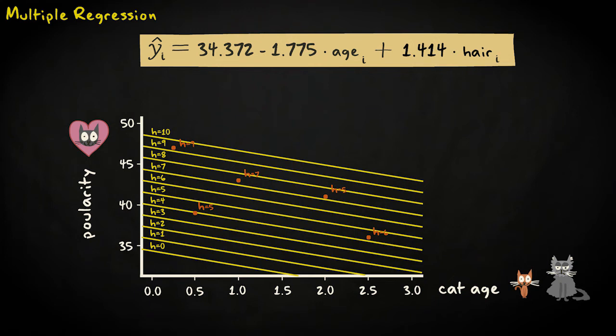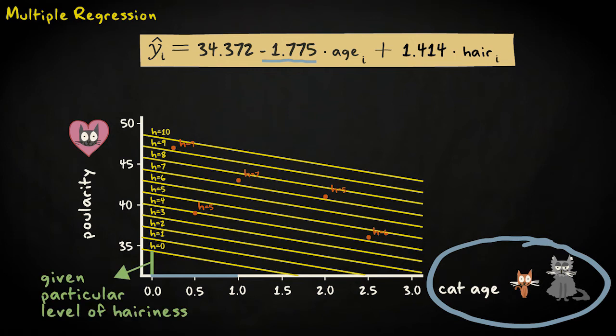From this, we can see that in multiple regression, for a particular predictor, the regression coefficient gives you the change in the response variable per unit increase of that predictor, given the values of the other predictors.